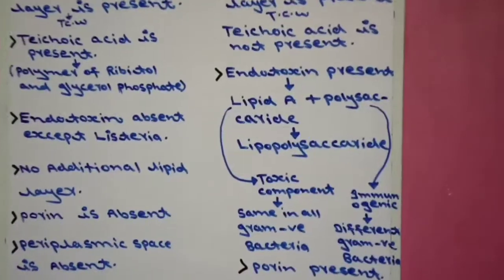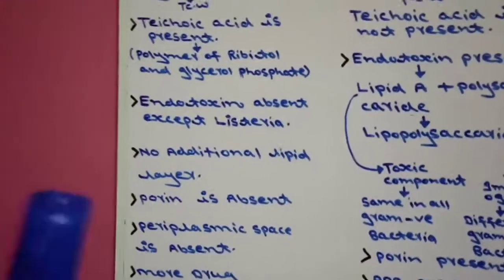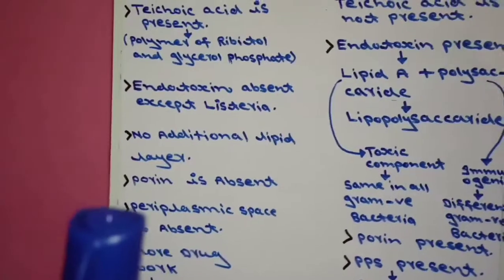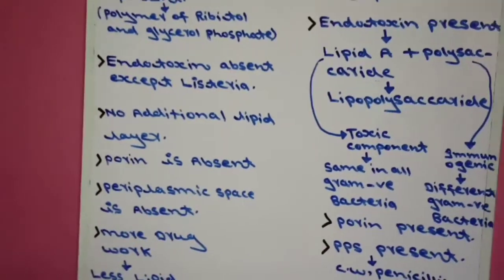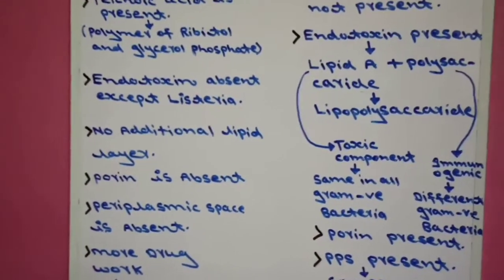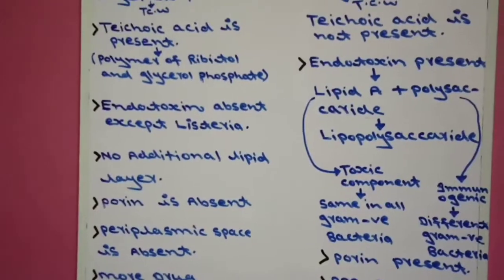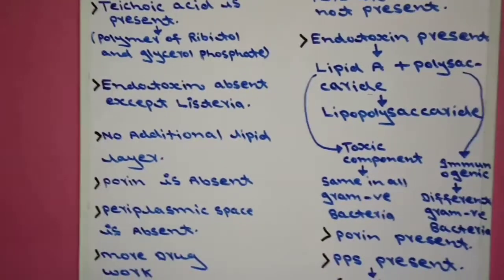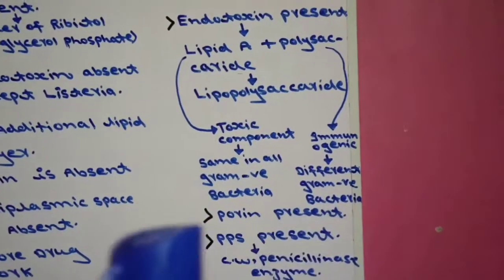The fifth difference: in gram positive bacteria, porin is absent; in gram negative bacteria, porin is present.